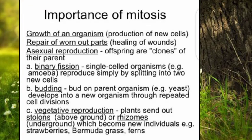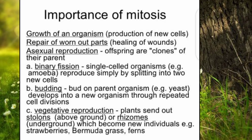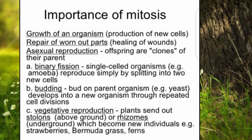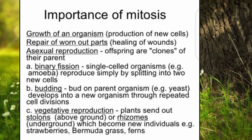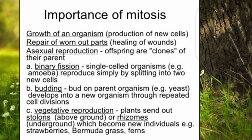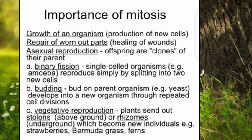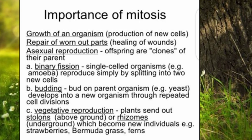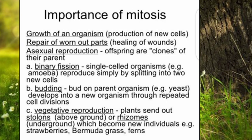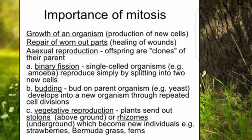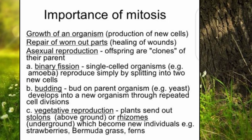Today we are going to study about the importance of mitosis. Mitosis is the type of cell division which divides a single cell into two daughter cells containing the same number of chromosomes as the parent cell. This means that mitosis is important for the equal distribution of hereditary materials into the daughter cell — the hereditary material being DNA.